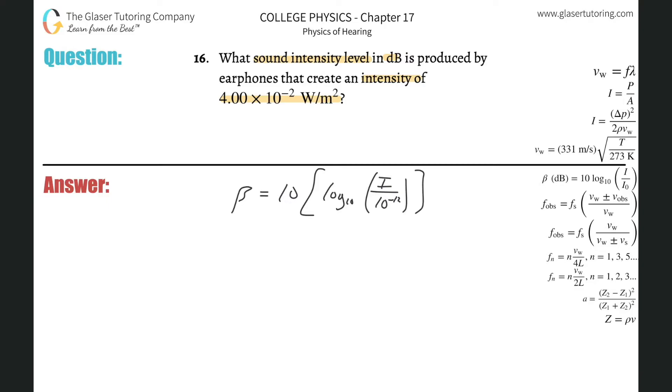So this is just 10 multiplied by log base 10 of the intensity that's being heard. So the earphones are producing an intensity of 4 times 10 to the minus 2.